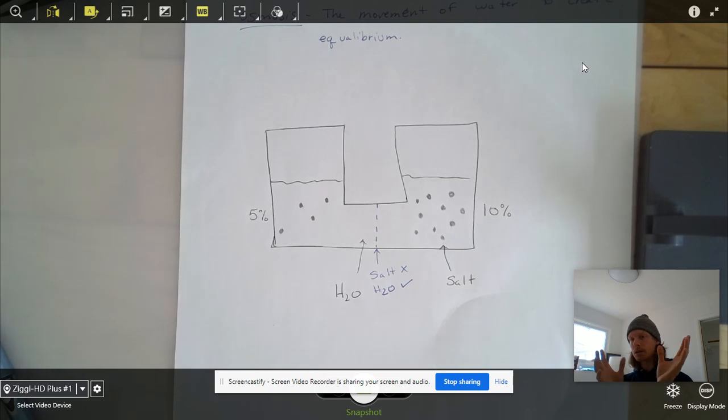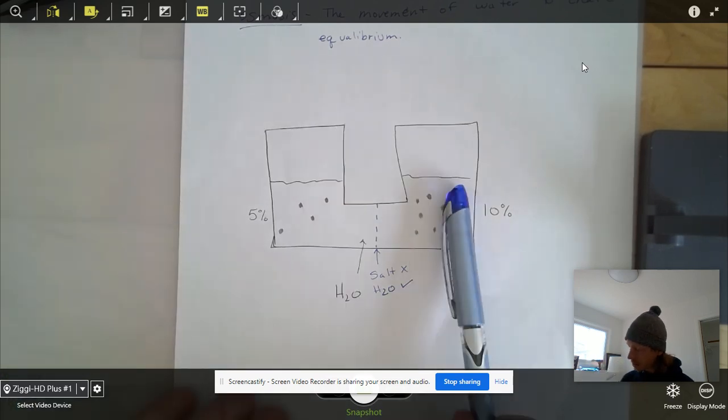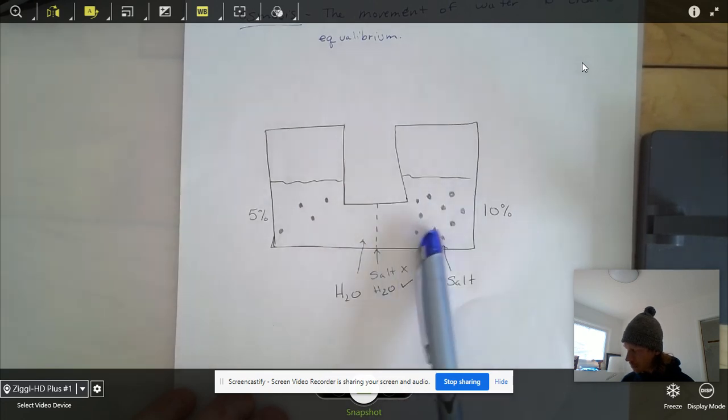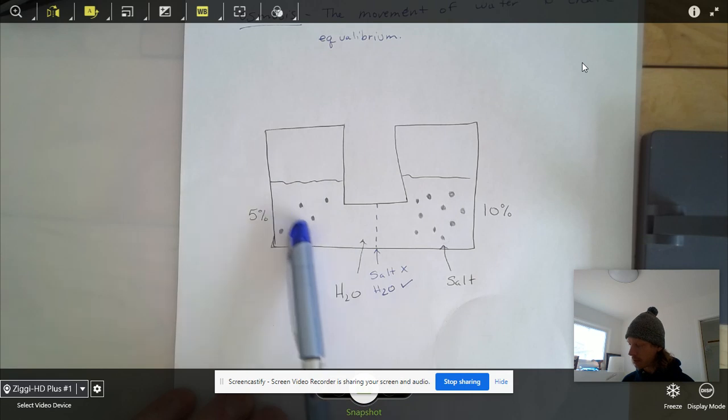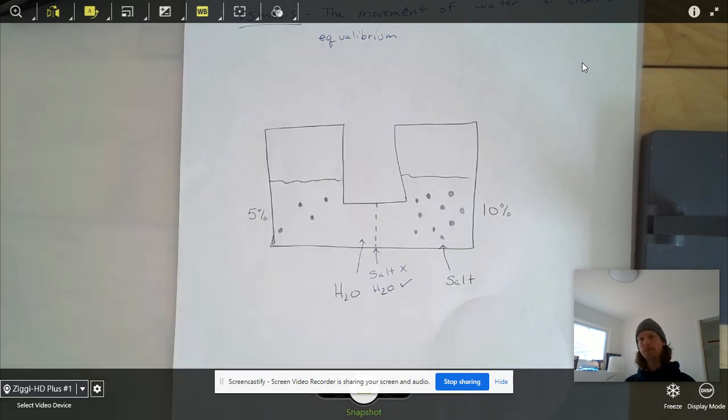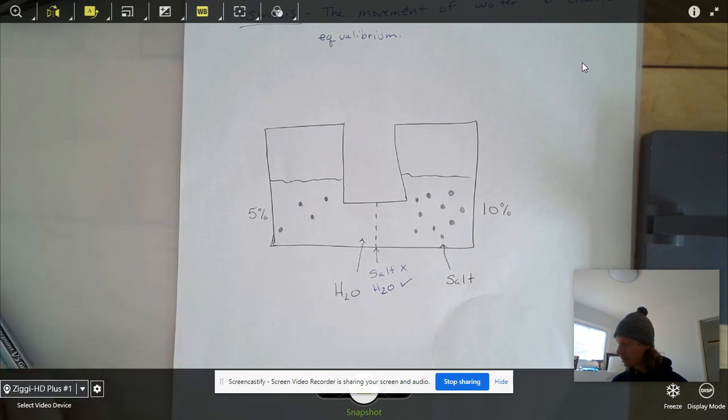What's going to start to happen is that the salt is going to try to balance out, but on this side, the salt is only going to be able to diffuse throughout this half of this little chamber on this side. So we're going to have unequal concentrations, but nature's always tried to get to equilibrium. So what's going to happen?